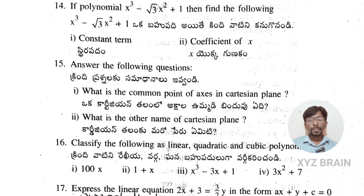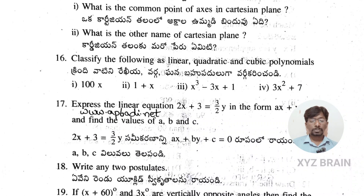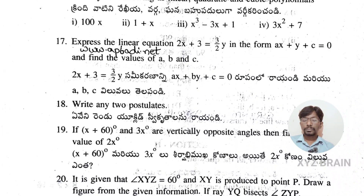Question 15: answer the following — what is the common point of axes in the Cartesian plane, and what is the other name for the Cartesian principle? Question 16: identify which of the following is a linear, quadratic, or cubic polynomial. Question 17: express the linear equation 2x + 3 = -3/2 y in the form ax + by + c = 0, and find the values of a, b, and c.